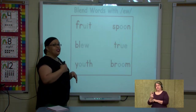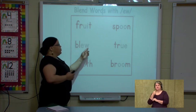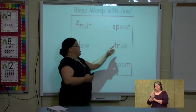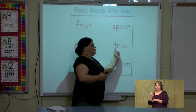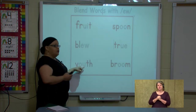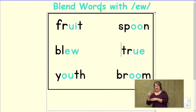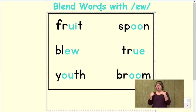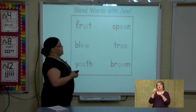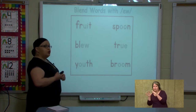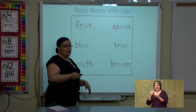E-W again says oo. Let's sound it out: blue. U-E says oo. Let's do the sounds: true. O-U says oo. Notice th is at the end of the word — it's going to make that soft th sound: youth. And O-O says oo. Sound — broom. Good job. Let's read the words with oo. Ready? Fruit, spoon, blue, true, youth, and broom. Good job.